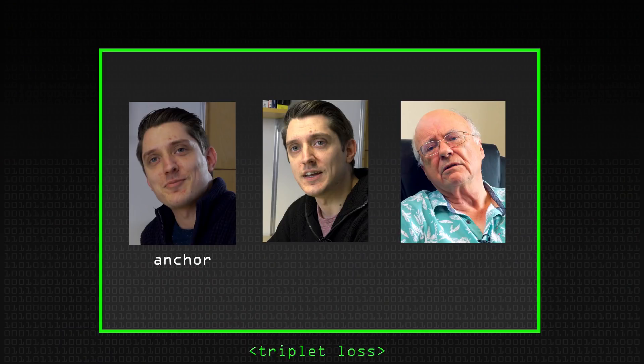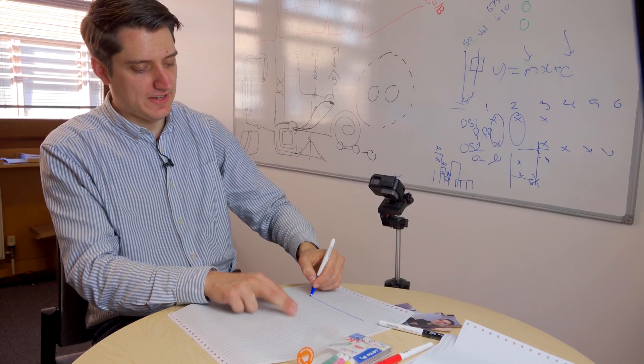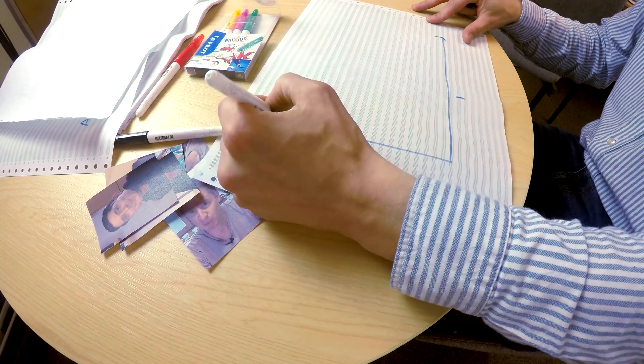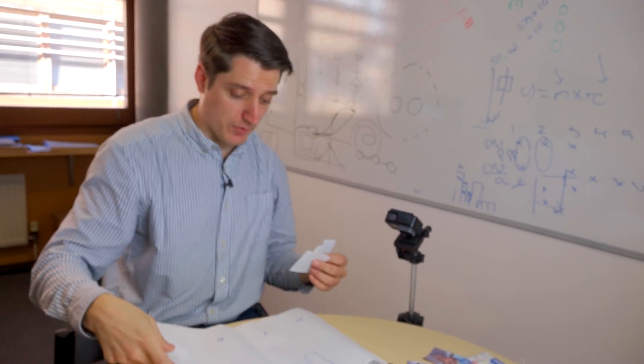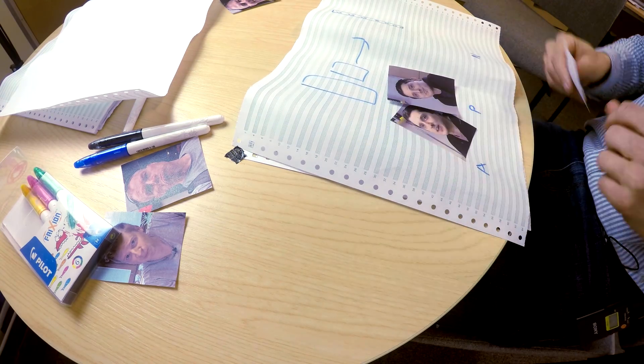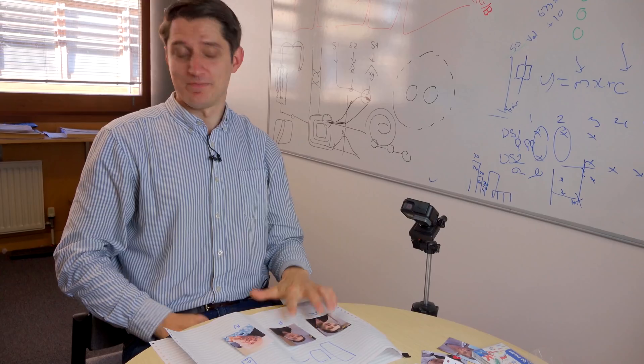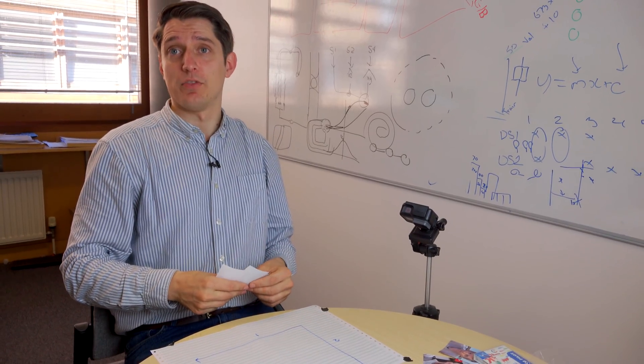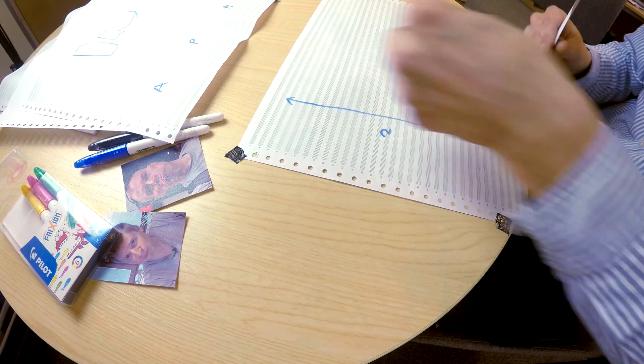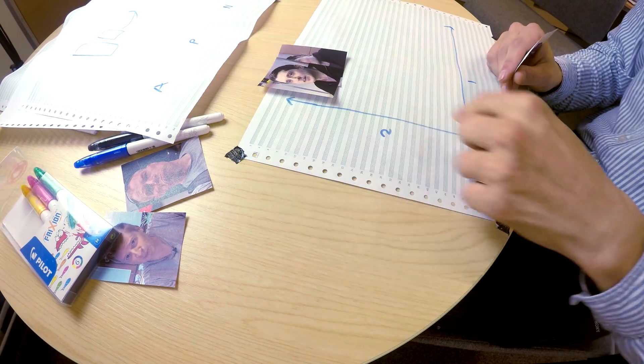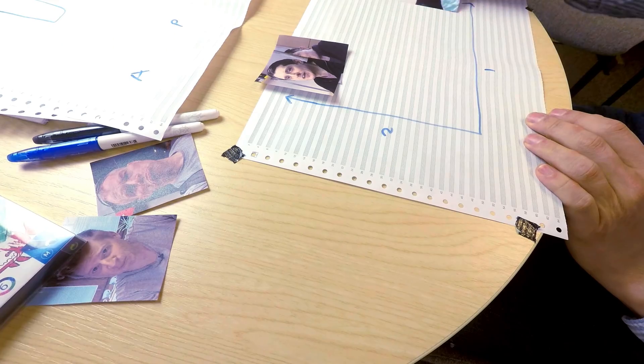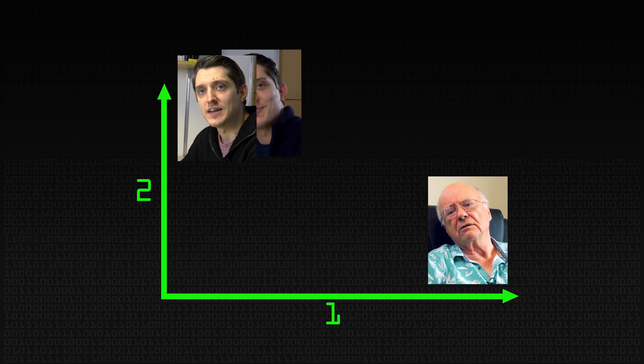We label this one an anchor, this one a positive sample, and this one a negative sample. The distance between these two has to be very similar and the distance between these has to be very far apart. Let's imagine there's only two numbers out, so we're putting ourselves on a 2D grid. My anchor is a picture of me, a positive sample, and a negative sample which is Dave. I get put over here with a very high value for 2 and a very low value for 1. Dave gets a very high value for 1 and a very low value for 2.